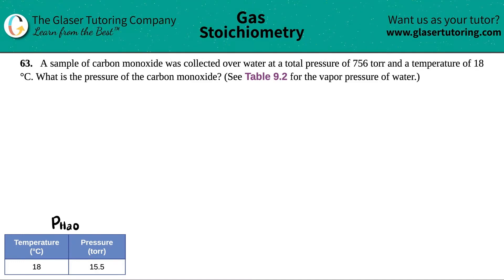Number 63: A sample of carbon monoxide was collected over water at a total pressure of 756 torr and a temperature of 18 degrees Celsius. What is the pressure of the carbon monoxide? See Table 9.2 for the vapor pressure of water.